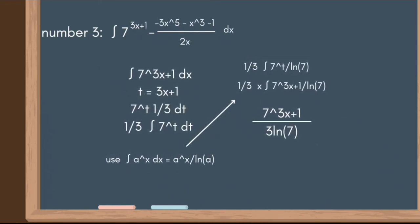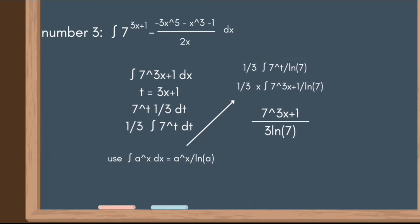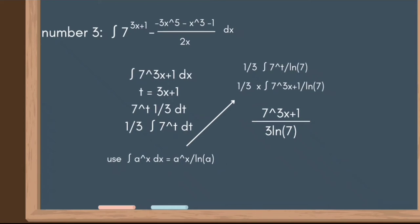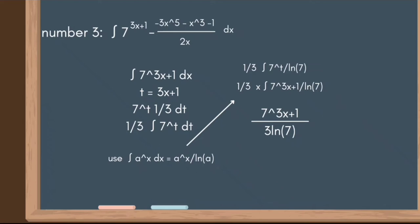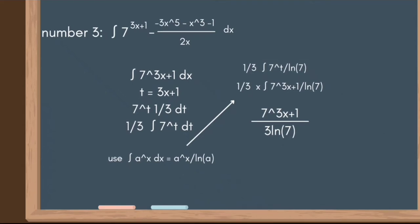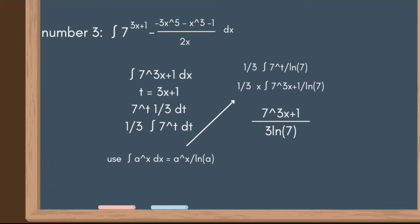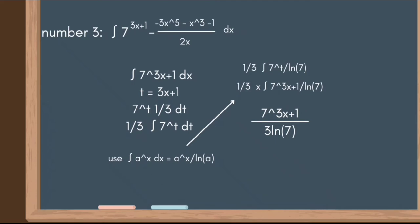Moving forward to number three: the integral of (7^(3x+1) - 3x⁵ - x³ - 1/(2x))dx. Just like number two, we use the property of integrals to separate 7^(3x+1) and the remaining terms. For the first part, the integral of 7^(3x+1)dx, we use substitution: let t = 3x+1, transforming the integral into the integral of 7ᵗ times (1/3)dt.